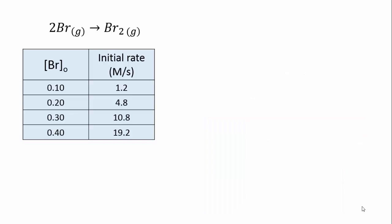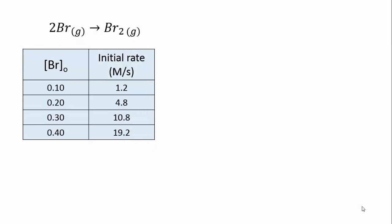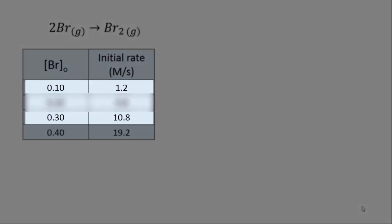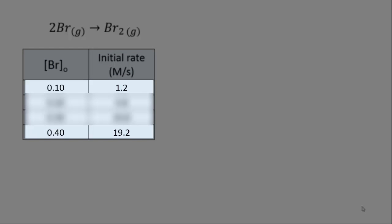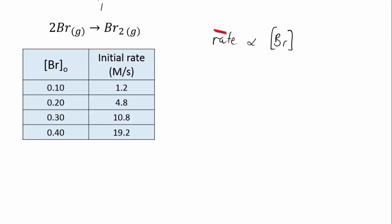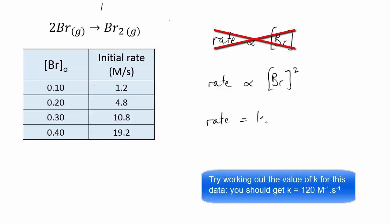Let's look at another example. In this reaction, two bromine atoms combine to form a diatomic bromine molecule. An experiment was performed where the initial concentration of bromine atoms is varied and the rate of reaction is measured. When the bromine atom concentration doubles, the rate quadruples — from 0.1 to 0.2 mol/L, the rate goes from 1.2 to 4.8 mol/L/s. When the concentration triples, the rate is multiplied by 9; when it quadruples, the rate is multiplied by 16. Clearly the rate is not proportional simply to the concentration of bromine atoms, but to the square of their concentration. The rate law becomes: rate equals K[Br]².